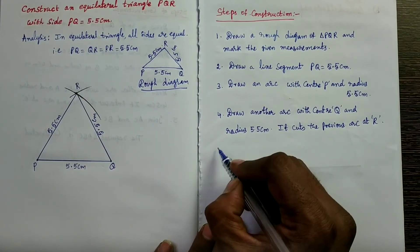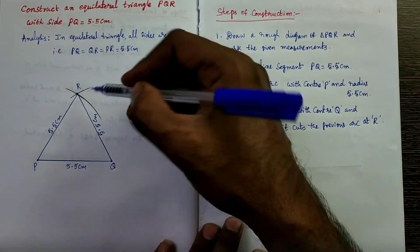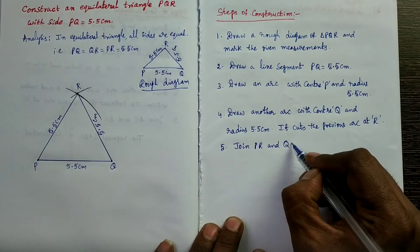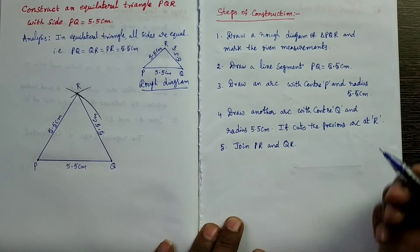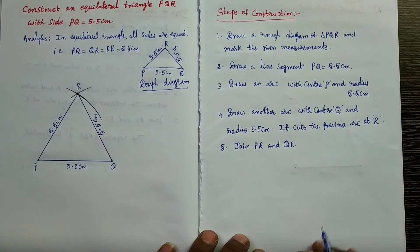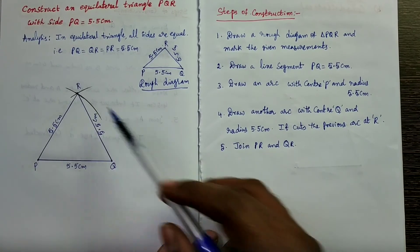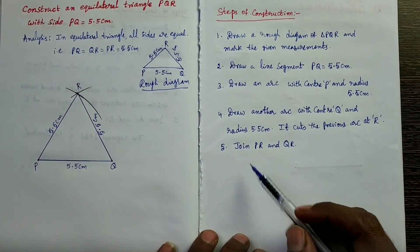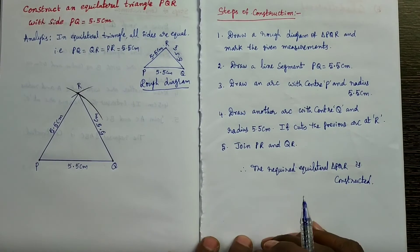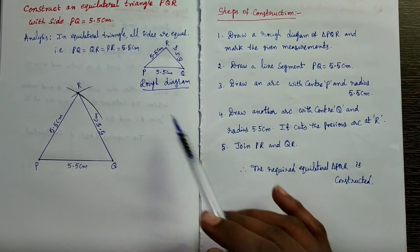Step 4 — draw an arc with center Q and radius 5.5 cm, and this arc cuts the previous arc at R. Step 5 — join PR and QR. Therefore, the required equilateral triangle PQR is constructed. This is the construction of the given triangle.